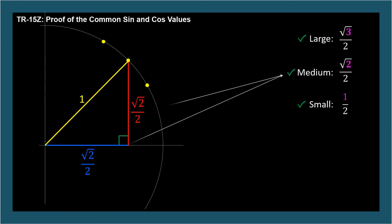So by using only a unit circle, knowledge that the interior angles of a triangle add up to 180 degrees, and the Pythagorean theorem, we're able to prove the common sine and cosine values of square root of 3 over 2, square root of 2 over 2, and 1 half.